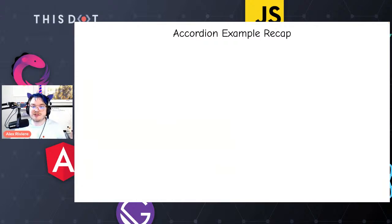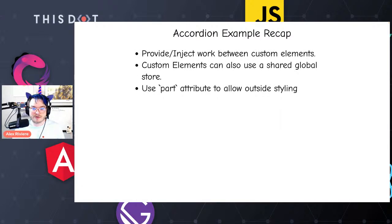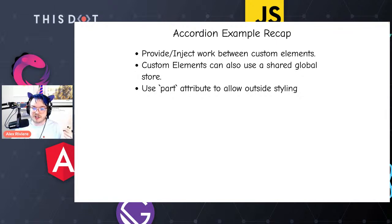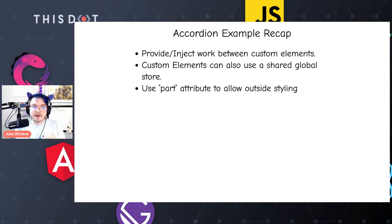The ::part() selector works like a class — you add a part attribute with one or more space-separated words, then from outside you write ::part(name). I have a content part, and for expanded content I use two words separated by a space. I also have a sideways accordion by adding a class to the wrapper — it works left-to-right instead of top-to-bottom. That's the accordion example.